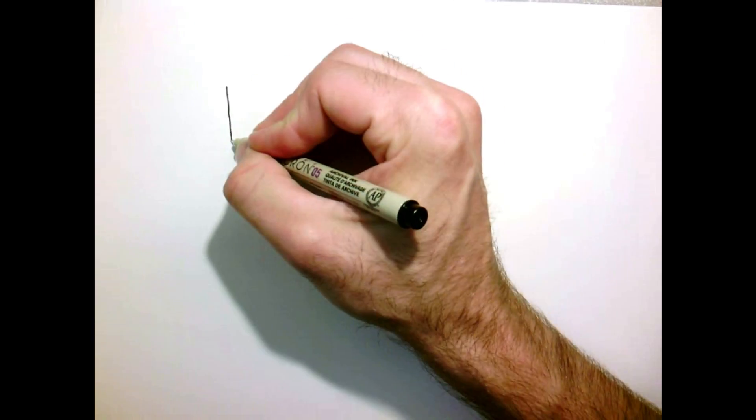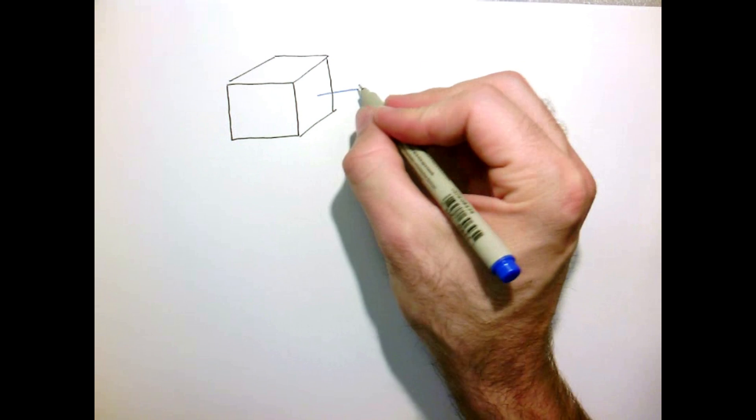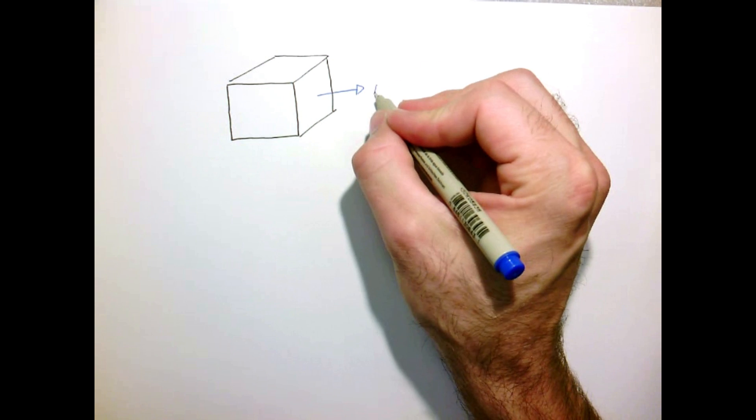So the stress tensor is just a generic representation of the state of stress inside the material. So if we have a cube, we have faces in different directions, and the stress tensor just describes the forces or the stresses that are acting on each of those faces.